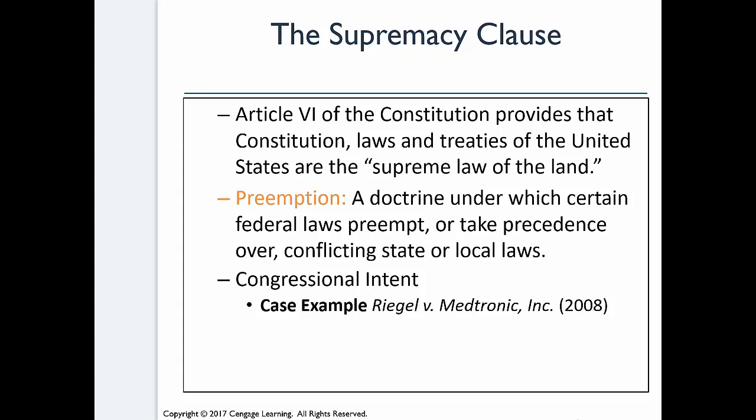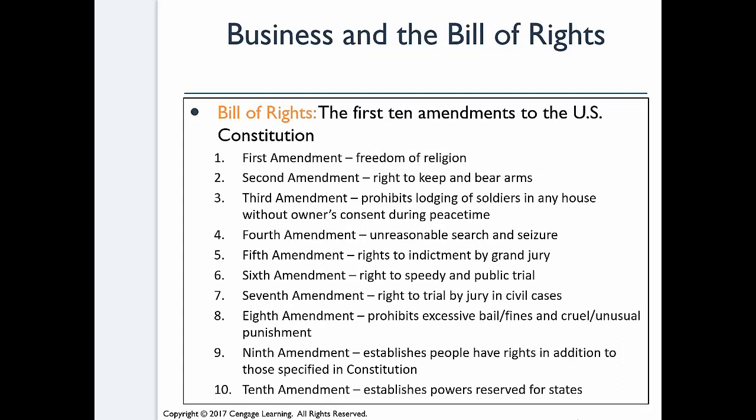The Bill of Rights are the first ten amendments to the Constitution — keep in mind they were ratified all at once. Every last one of these has restrictions. The First Amendment covers freedom of religion, but there are actually five major freedoms covered under it. The Bill of Rights originally only applied to the federal government, reflecting the tension between state sovereignty and a strong central government.